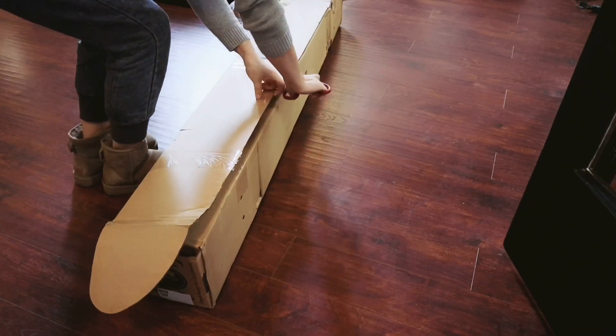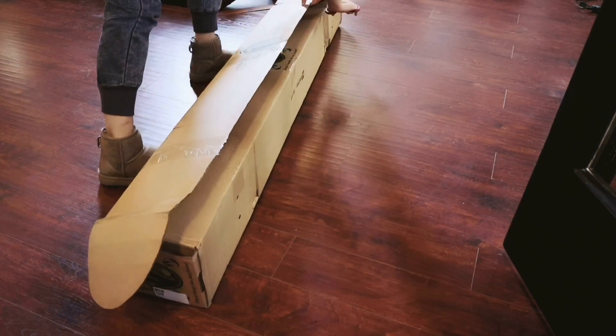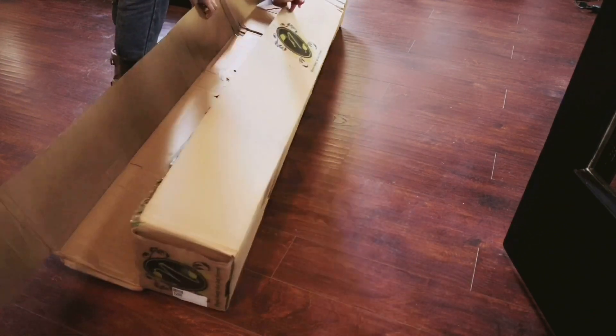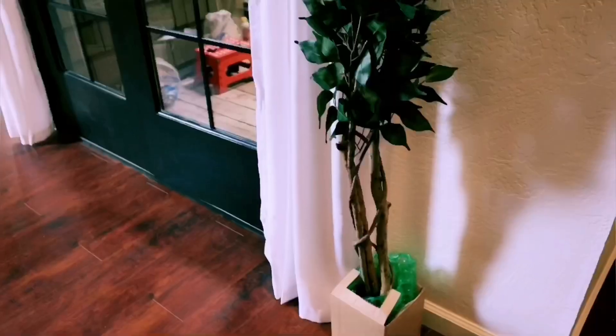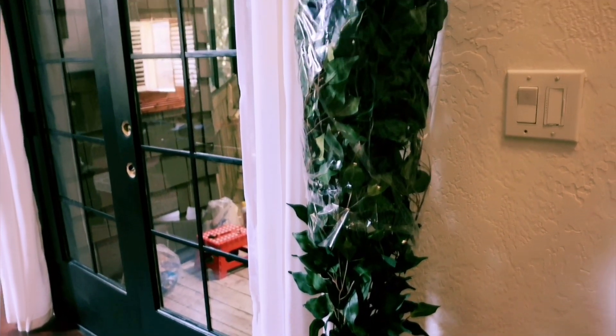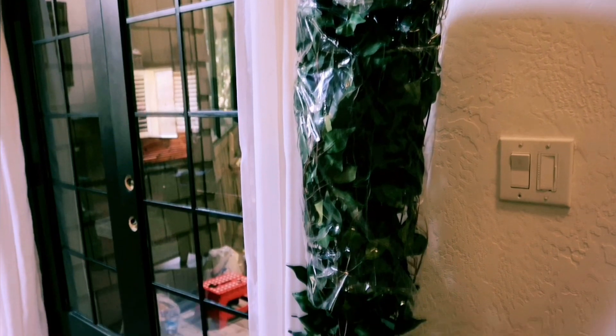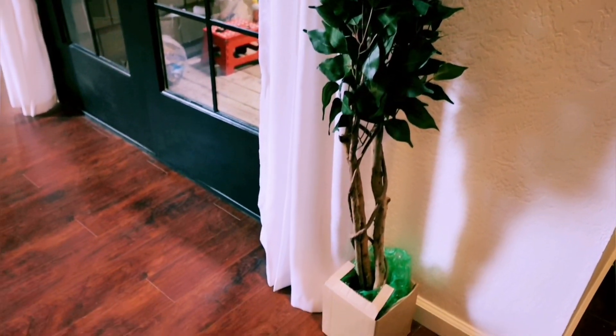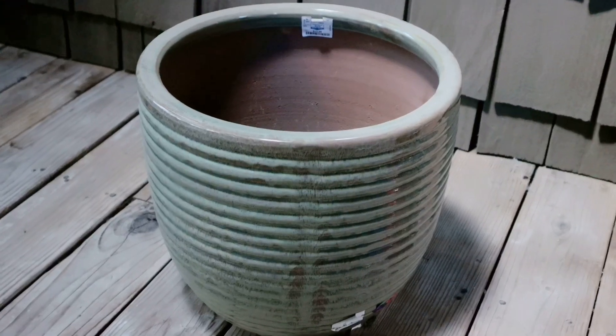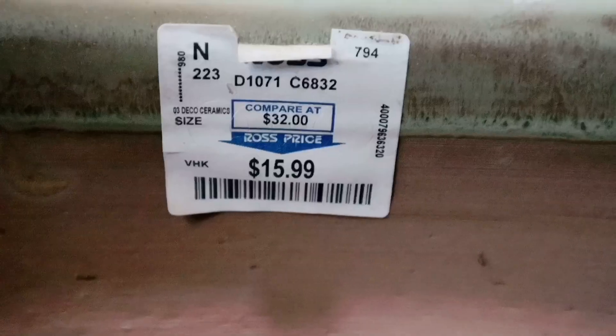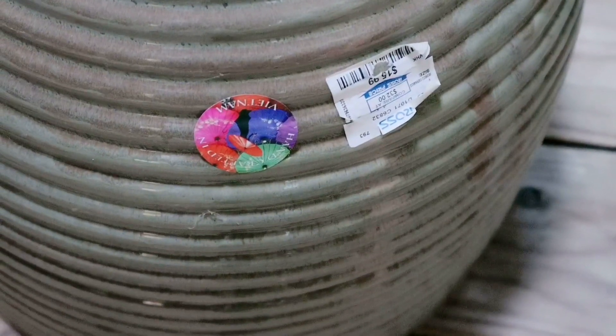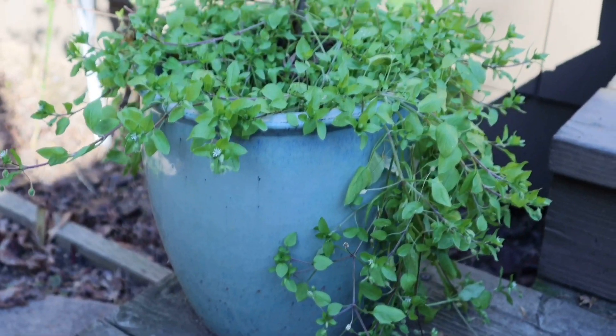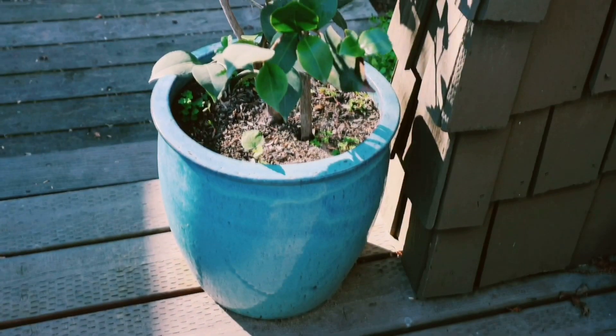I ordered this 5 feet tall artificial ficus tree from Macy's last week, and it just arrived yesterday. The original price was $126 and was on sale for $44, which I think is a very good price. The only issue is this pot is too small compared with the size of the tree. I got this large ceramic pot from Ross. It was $15.99. I like the pots from Ross. They are mostly handmade from Southeast Asia. And this one says handmade in Vietnam. I got 6 or 7 of them together. I placed them everywhere around the house and they look great.